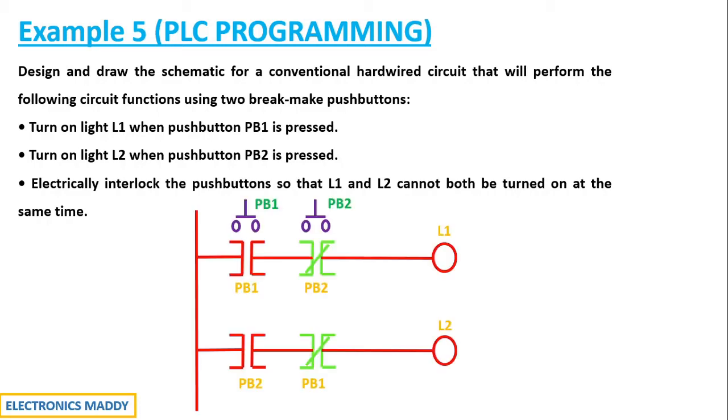So this is the ladder diagram which is quite similar to the quiz problem that we saw with respect to the example in interlocking. Over here if you carefully observe we have two push buttons which is PB1 and PB2 and they are electrically interlocked by using normally closed contacts connected in this particular fashion. PB1 over here, PB1 over here in the second rung with a normally closed contact. This is a normally open contact. Let's do the analysis part with respect to this problem.